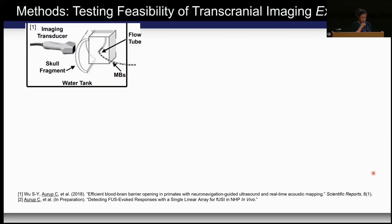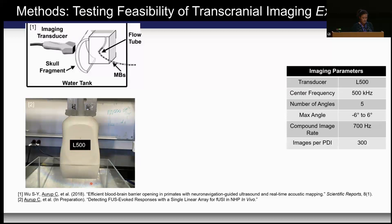The last thing I want to cover on functional ultrasound is how well it translates to non-human primates. In ultrasound, we scale everything to the wavelength. For mice — about 7 mm brain depth — we use 15 to 40 MHz frequencies to get up to 50-micron resolution. For non-human primates, the skull is much thicker, so higher frequencies can't penetrate. We had to customize our own imaging transducer — working with a manufacturer in France — and go down to 500 kHz. We call this the L500 linear array. We also use compounding plane wave imaging, trading resolution for very high frame rates.